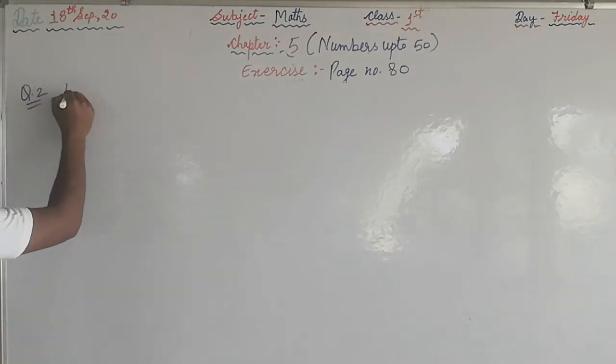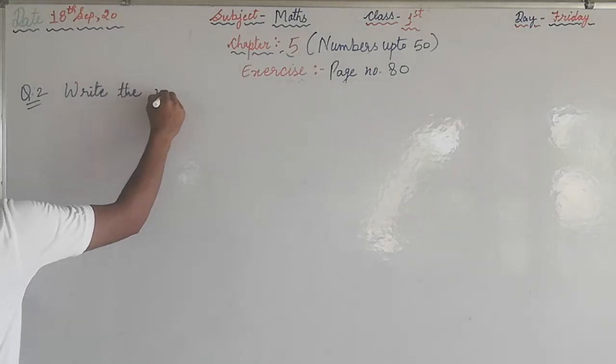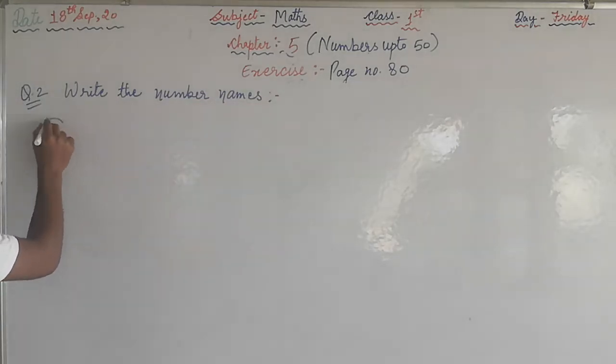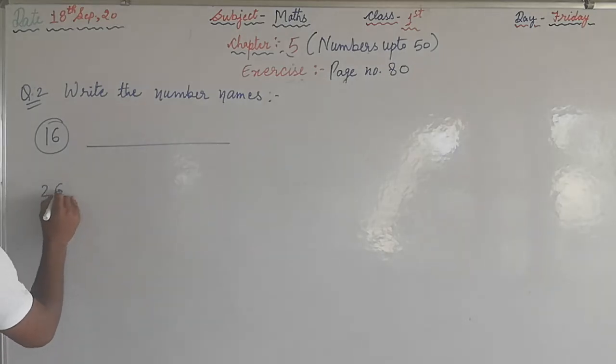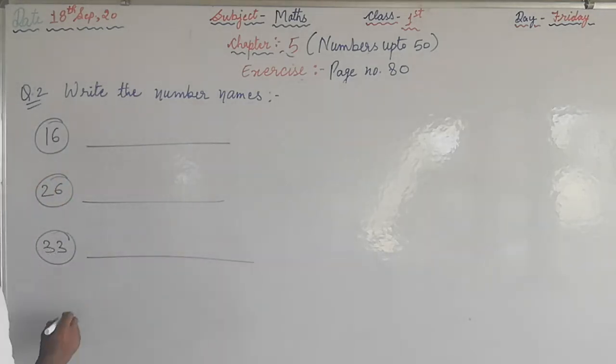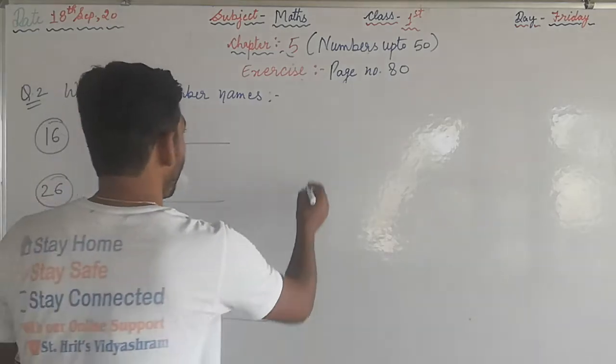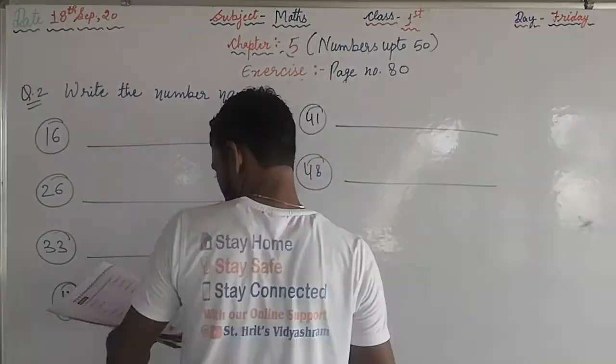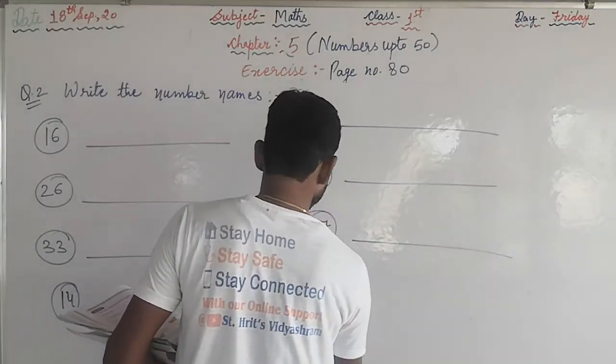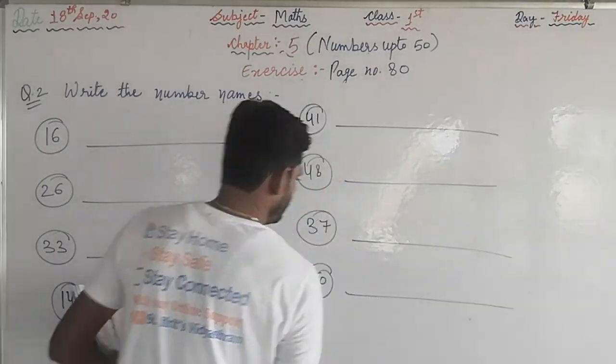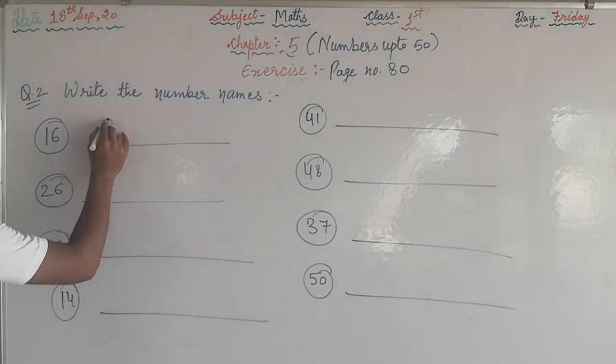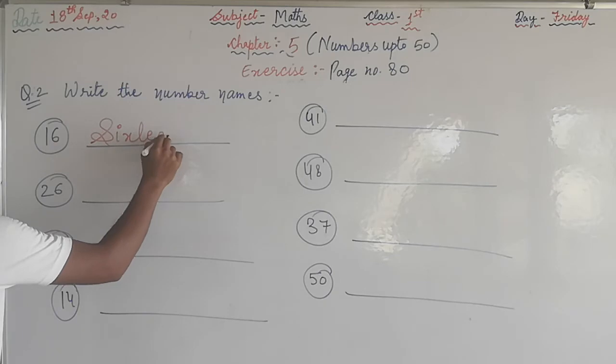Question number 2: write the number names. 16, 26, 33, 14, 41, 48, 30, 37, and 50. See this question, what we have to do? We have to write the number names.